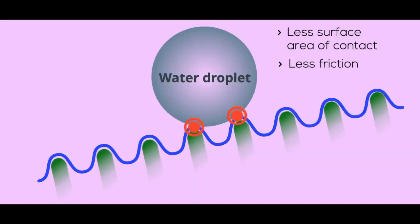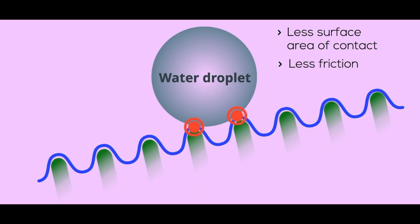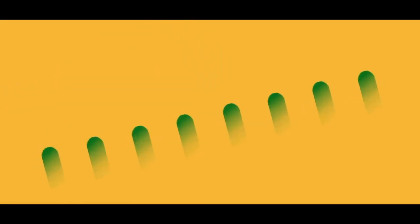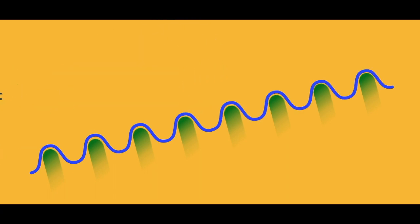And less stability of water droplets due to its narrow base. Also, the dirt particles are picked up by water droplets as they slide off, giving the lotus leaf a self-cleaning property.